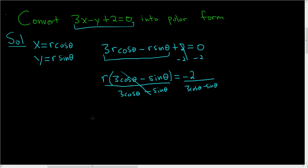And we end up with what we want. So r equals negative 2 divided by 3 cosine theta minus sine theta. That is the final answer. I hope this helps.